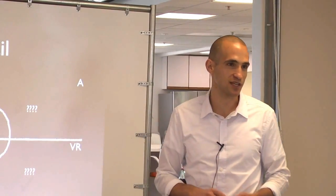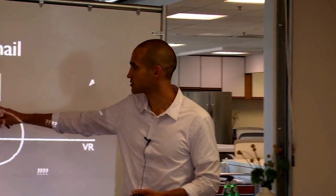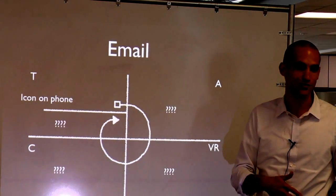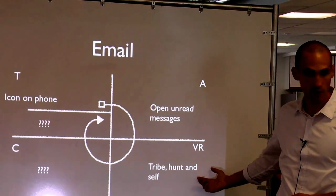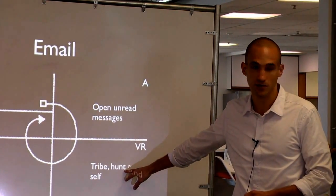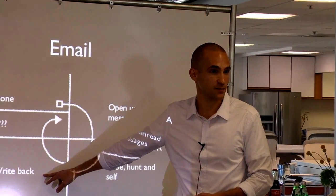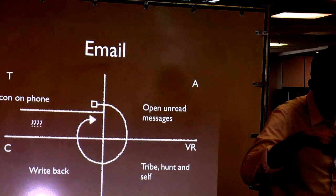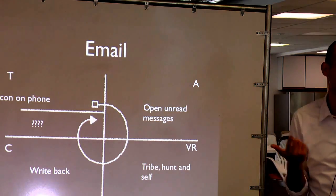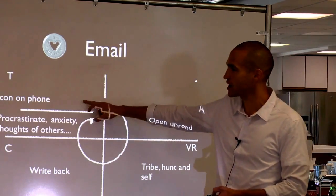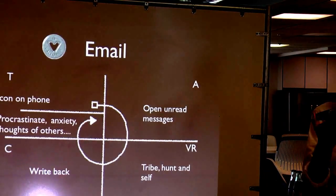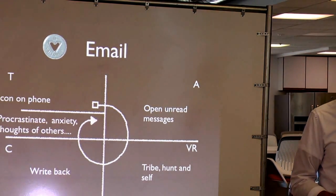Let's run through the Desire Engine with email. The external trigger is an icon on your phone. The action is to open the unread message. The variable reward is all three types — and products that use all three tend to have much greater habit-forming potential. The commitment phase is to write back — replying to email is not about immediate rewards, it's about the anticipation of future rewards. Now the cycle begins again. It's no longer just the external trigger — now you're checking email when you want to procrastinate, when you're feeling anxious, when you're thinking about others. You have internal triggers. Now it's a painkiller.